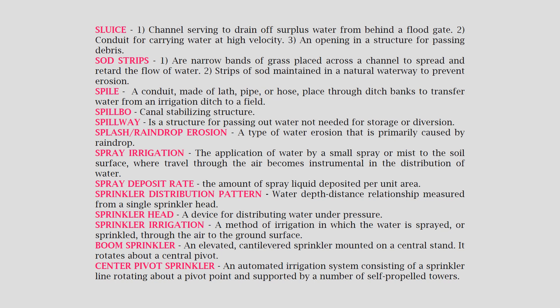Spray irrigation: the application of water by a small spray or mist to the soil surface where travel through the air becomes instrumental in the distribution of water. Spray deposit rate: the amount of spray liquid deposited per unit area. Sprinkler distribution pattern: the water depth-distance relationship measured from a single sprinkler head.